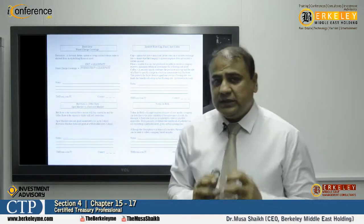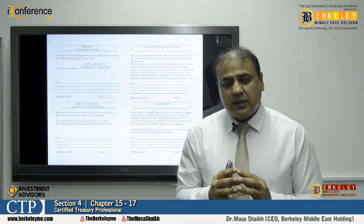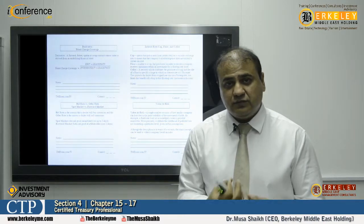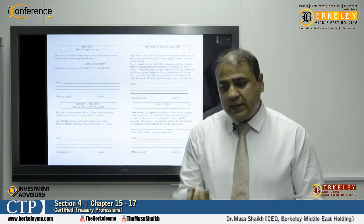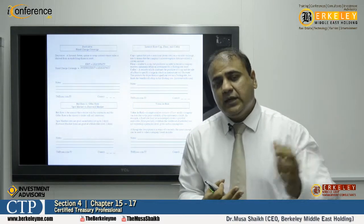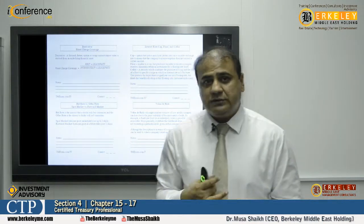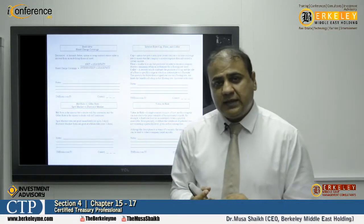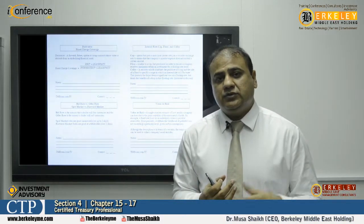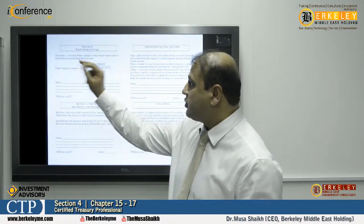To understand forward and future contracts, consider an example: if you have a buyer, a seller, and an underlying asset on which you want to trade, and the buyer and seller agree on a certain price and delivery at a certain time, that is called a forward contract. But if the same contract involves an unknown counterparty and the trade will be settled in the future, it is called a futures contract.